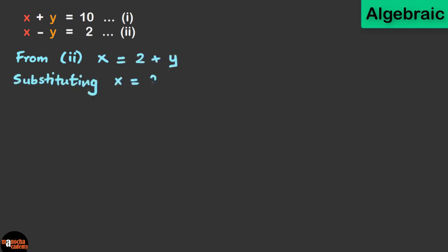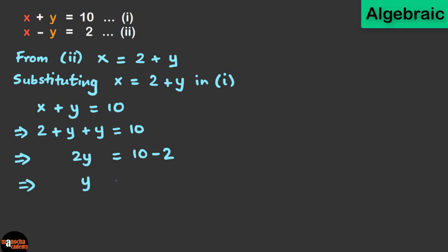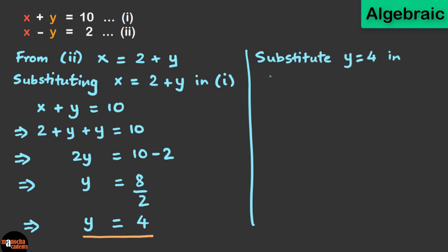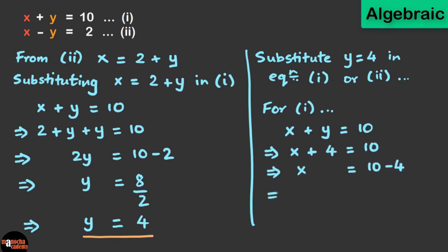Substituting x equal to 2 plus y in equation 1. As you can see, now we have only one variable y. So we can easily solve the equation. And solving we get y equal to 4. Now we can substitute y equal to 4 in equation 1 or equation 2. And we can get the value of x. So if we use equation 1 and substituting y as 4, on solving we get x equal to 6. So the solution of the equations is x equal to 6 and y equal to 4. And this matches the answer of our puzzle.